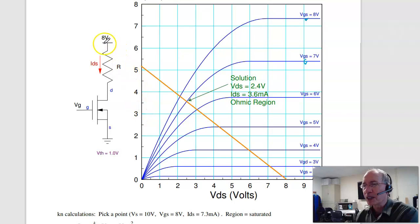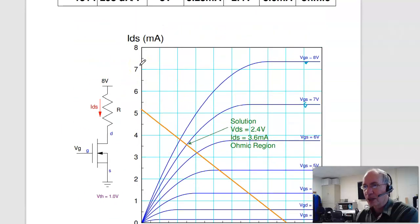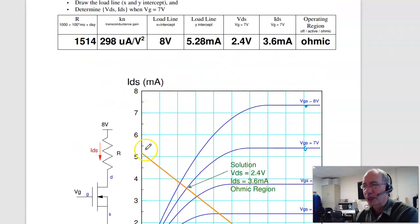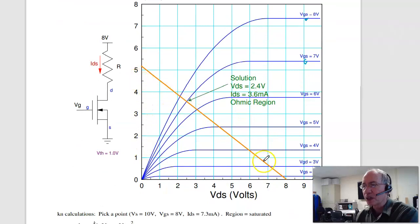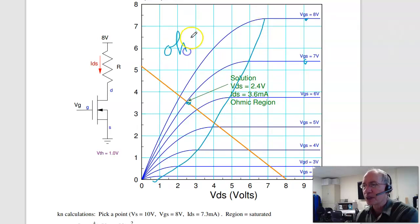For the load line, the x-intercept is 8 volts. The y-intercept is 8 over R, where is that, 5.28 milliamps. Draw the load line, where it intersects Vgs at 7 volts is your operating point. That's in the ohmic region. Again, draw a curve like this. Over here is ohmic. This region is saturated.